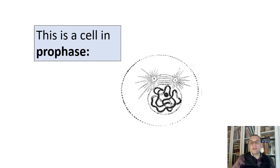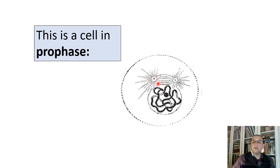A structure made of microtubules forms between the centrioles — this structure is called the spindle. Centrioles play a very important role in organizing the spindle fibers. Here you see a cell in prophase: the chromatin is coiled, the nucleus has started to disappear, and the nuclear membrane and nucleolus will eventually vanish by the end of prophase. Centrioles have appeared, and the spindle is also formed.